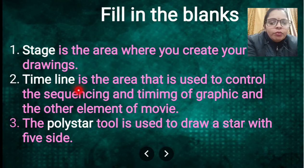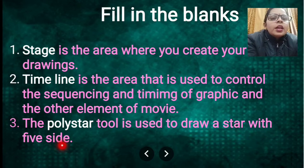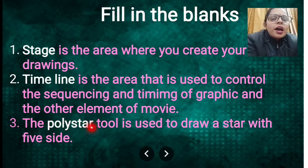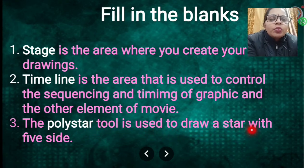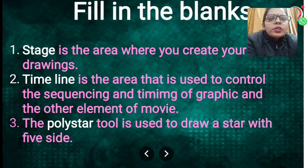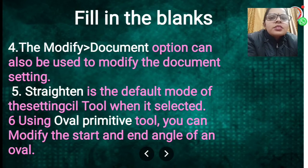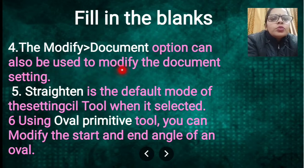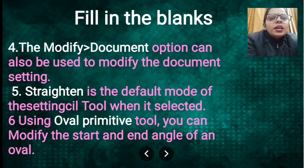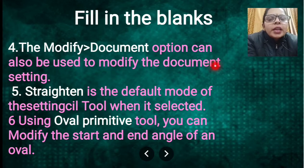Next fill in the blank: the blank tool is used to draw a star with five sides. When we have more sides than a rectangle, that comes under the Poly Star option — so the answer is the Poly Star tool. Next: the blank option can also be used to modify the document settings. To modify or change a document, the Modify menu is available — under Modify we can set the document.